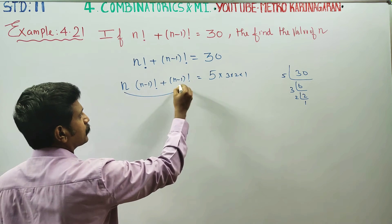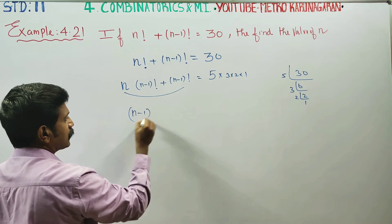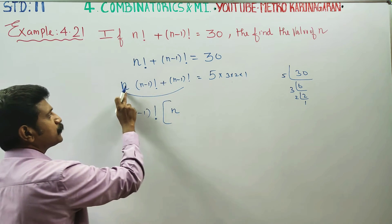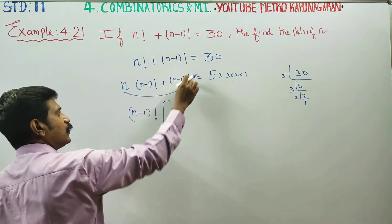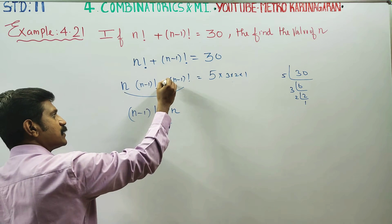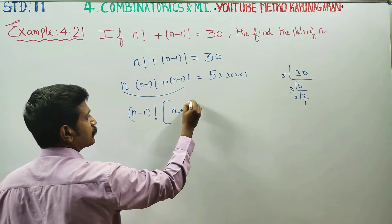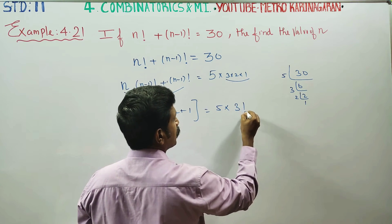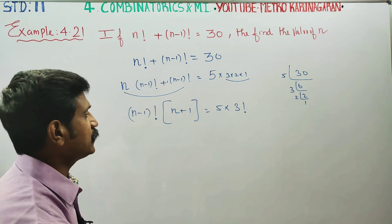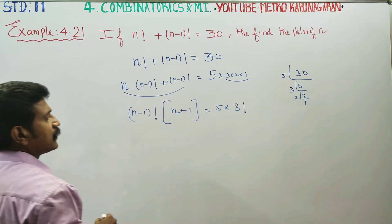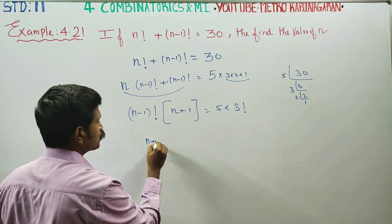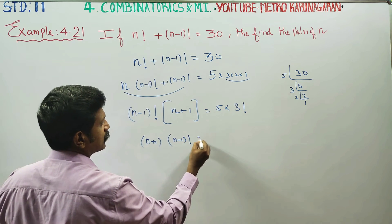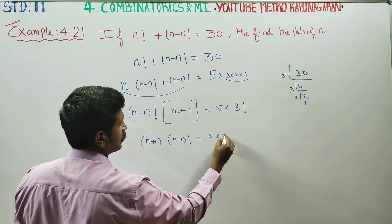Looking at n minus 1 factorial, we recognize that 5 into 3 into 2 into 1 equals 5 into 3 factorial, and 3 factorial equals 3 into 2 into 1. That means n factorial is equal to 5 into 3 factorial.